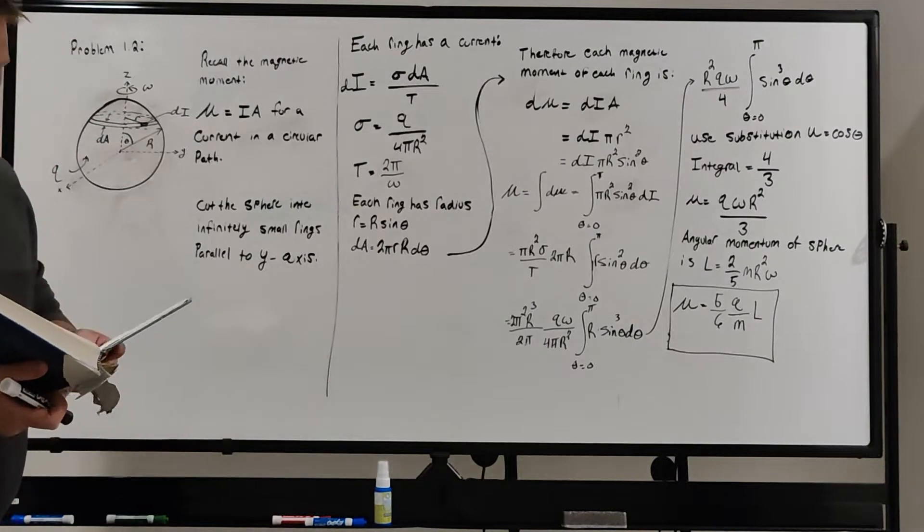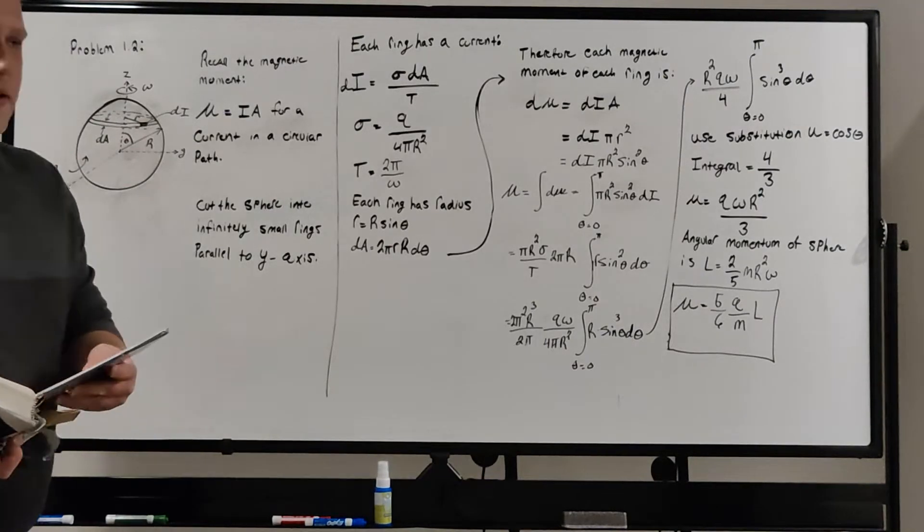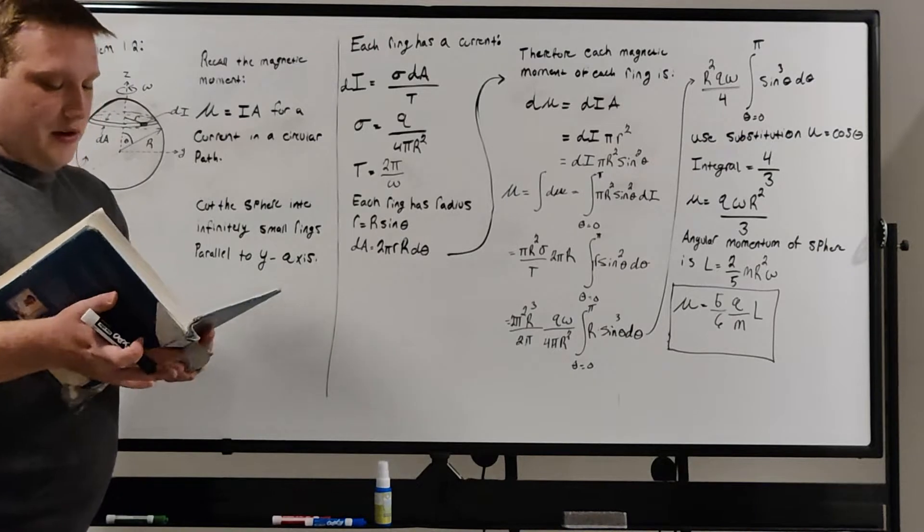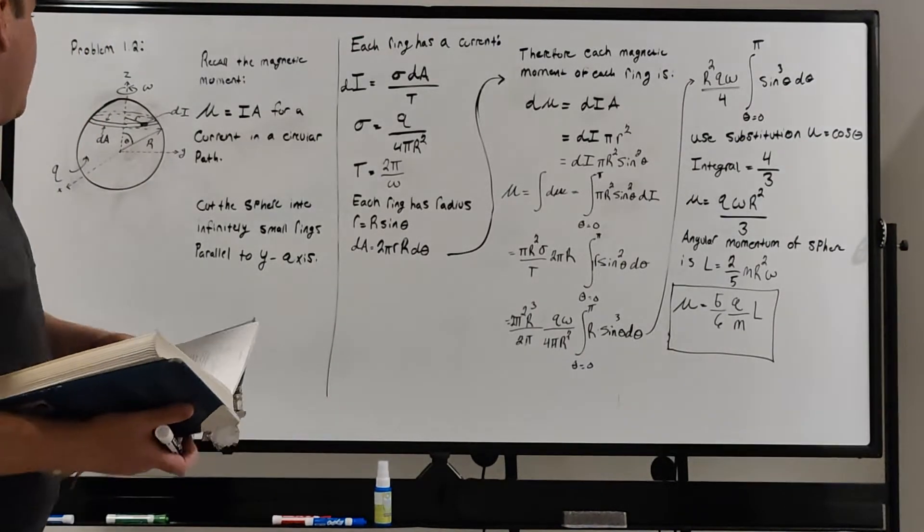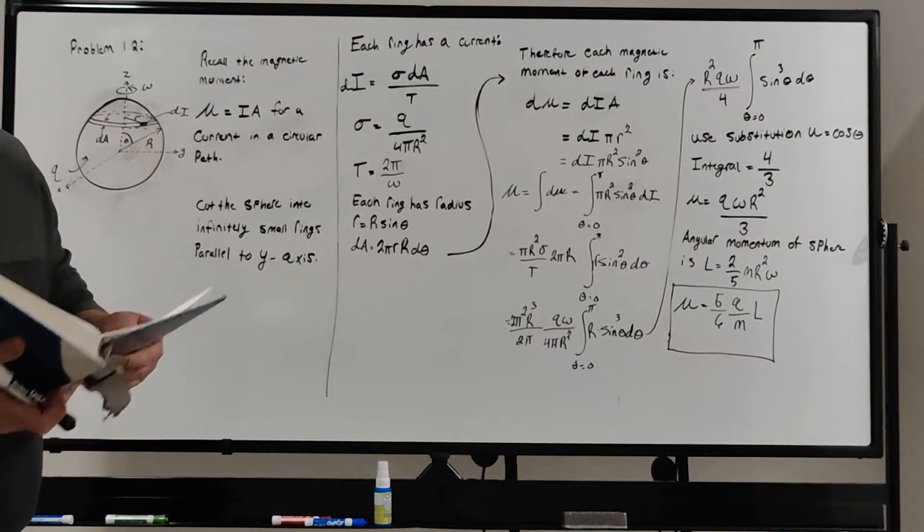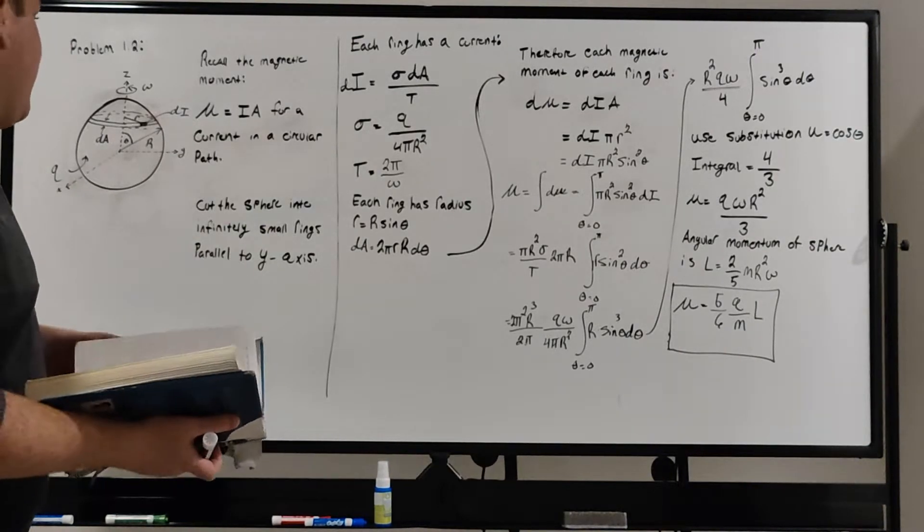There is a C in the equation because they use Gaussian units. In my example, I'm going to be using SI units, so there won't be a factor of C in the answer, but it'll be exactly the same.